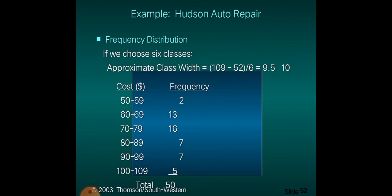Using the Hudson Auto Repair example, we found our class width of 10, derived from 109 minus 52 divided by 6 — choosing 6 classes — which equals 9.5, rounded up to 10. Therefore we count the frequency starting from 50 to 59.